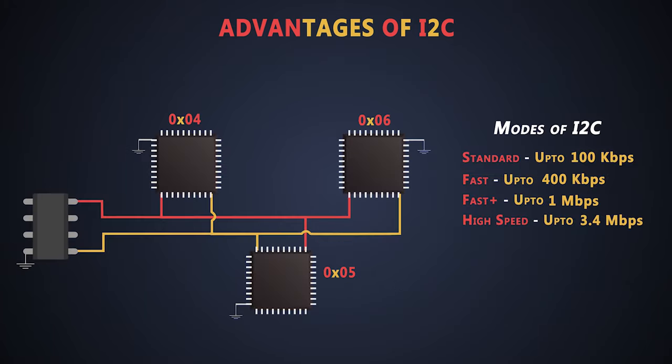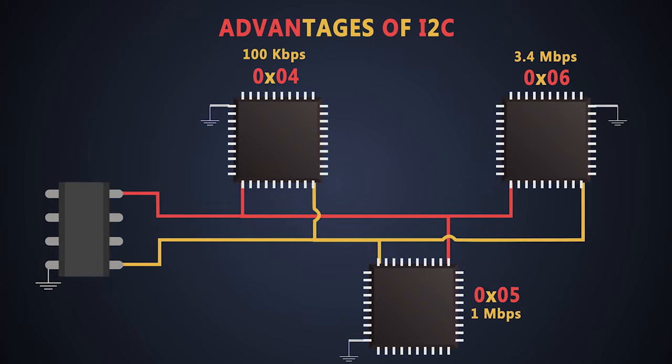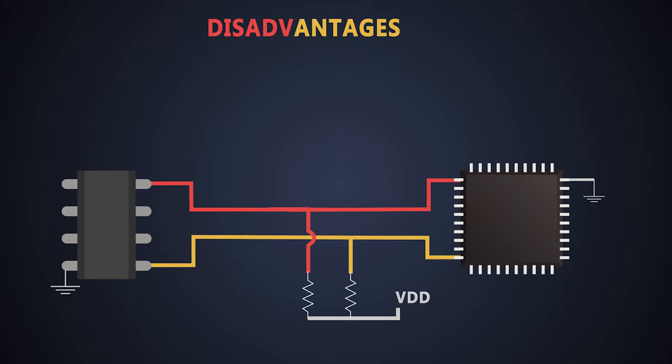I2C communication protocol adapts the requirements of various slave devices. For example, if a slave is little slower than other slaves connected on the bus, then it may stretch the clock line or the master will configure the compatible bus speed for the particular slave.